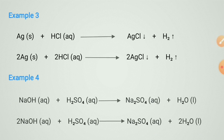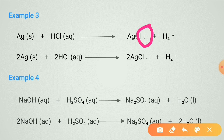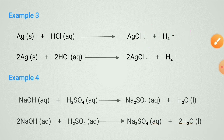The downward arrow symbol denotes precipitation, while the upward arrow symbol denotes a gas released from the reaction. These are the examples for balancing chemical equations. I think you can now solve many other examples based on the steps I have taught you.